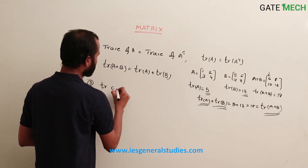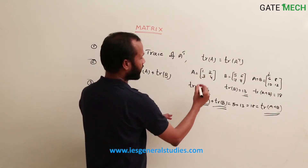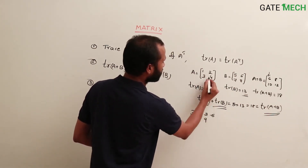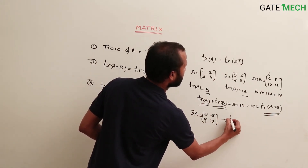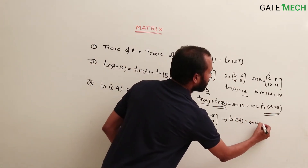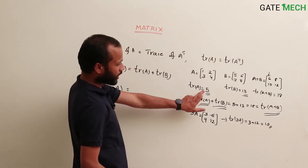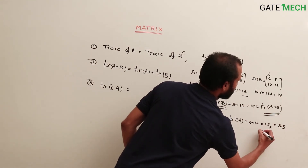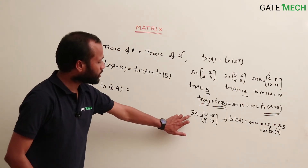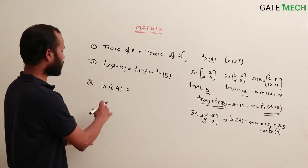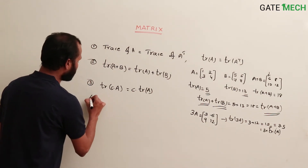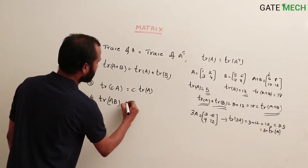Third property: trace of a constant times matrix A. Suppose A is [1, 2; 3, 4], then 3A is [3, 6; 9, 12]. Trace of 3A is 3 plus 12 equals 15. Trace of A is 5, so this is 3 times 5, which is 3 times trace of A. Therefore, trace of k times A equals k times trace of A.